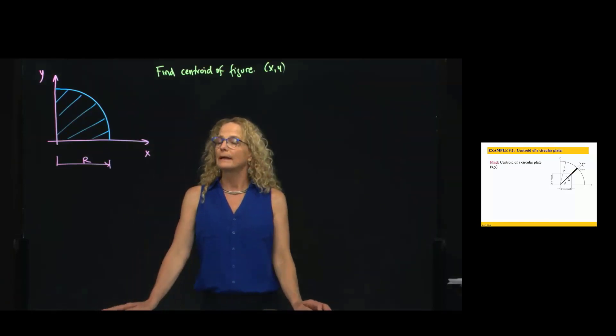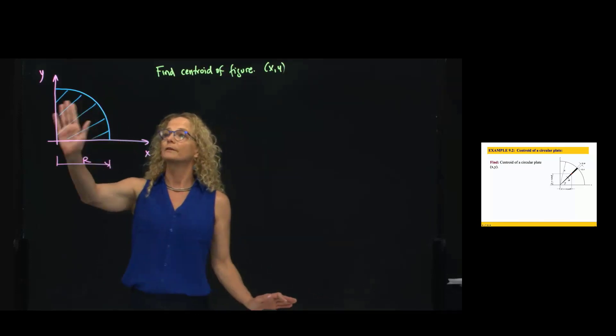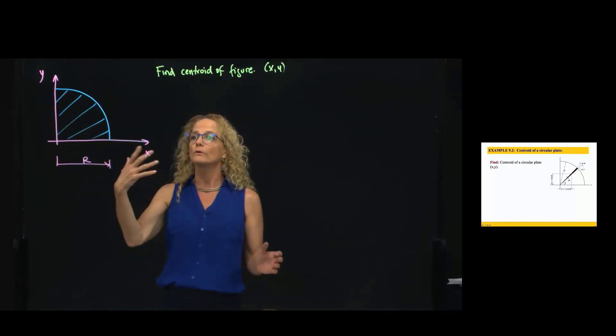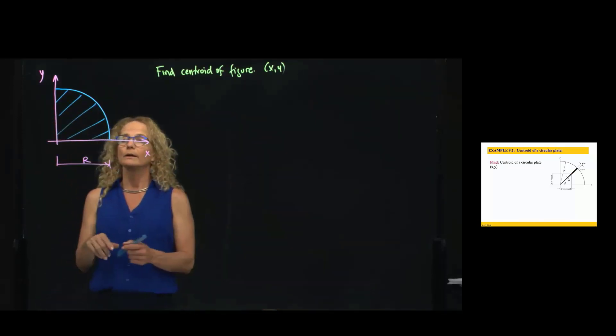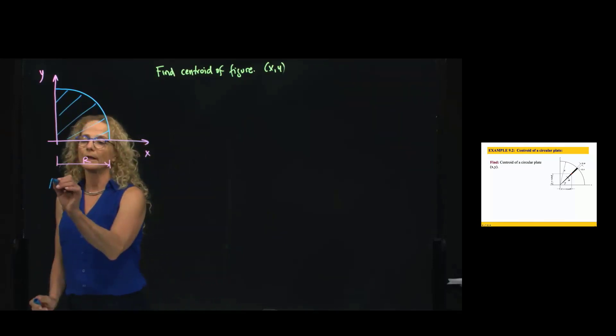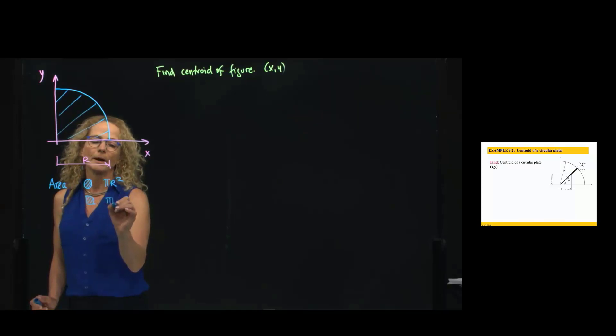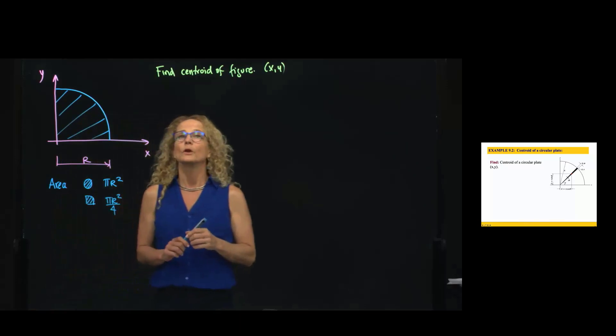Hi, this is problem 10.2, and we want to find the centroid of this circular plate. This is a quarter of a circle. If we like to recall how much is the area, we know that the area of a circular plate is pi r squared. Therefore, the area of this quarter of a circle will be pi r squared over 4.